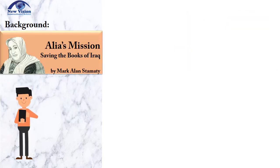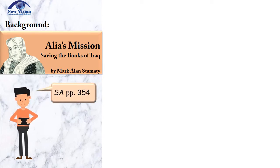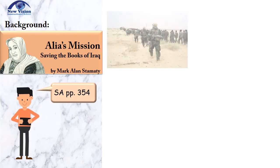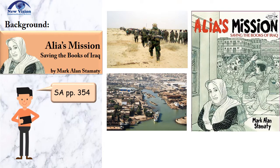Let us talk about the background of Aaliyah in the book. The war began in March 2003, and as the war got closer, Aaliyah Muhammad Baker, the chief librarian of the Central Library in Basra, wanted to find a way to save all the books before the library was destroyed. This selection is an excerpt from the graphic text that tells the true story of her efforts.